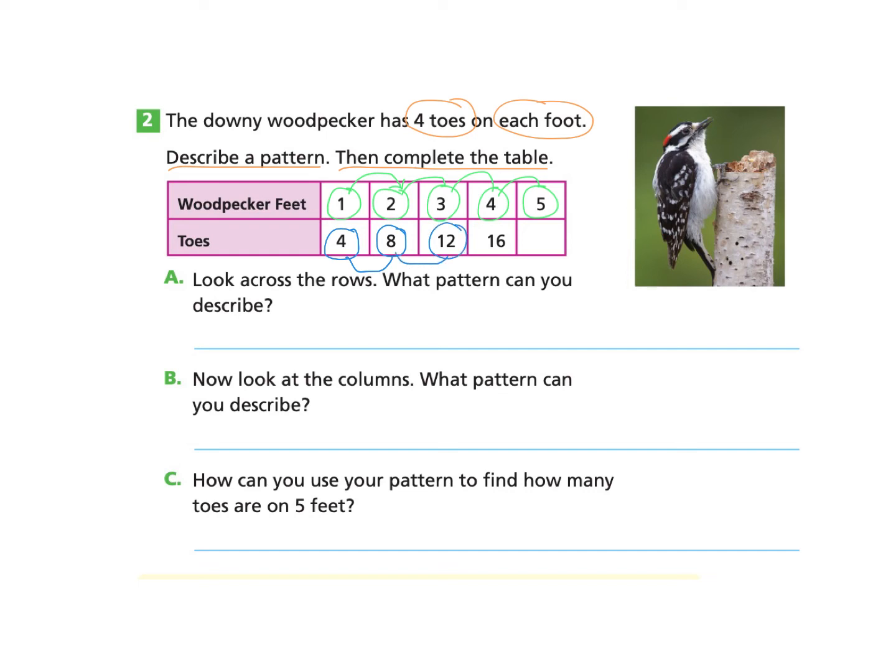And then to go from eight to 12, I would also need to add on starting at eight, nine, 10, 11, 12. I am adding four more to that number. And from 12 to 16, starting at 12, 13, 14, 15, 16. I've added four again. So I will explain that the number of feet increases by one and the number of toes increases by four.